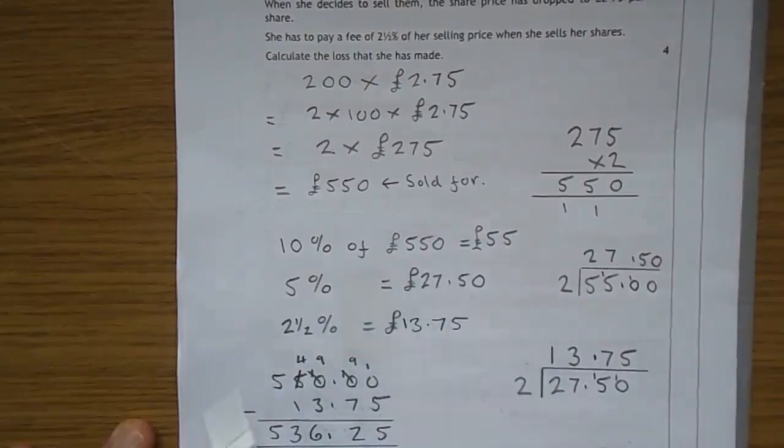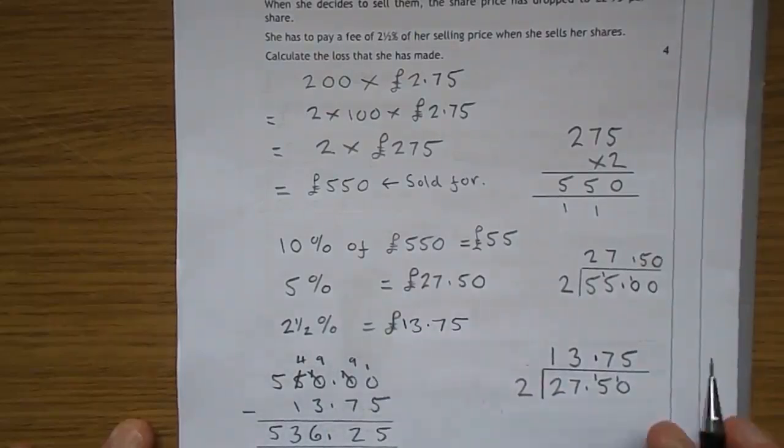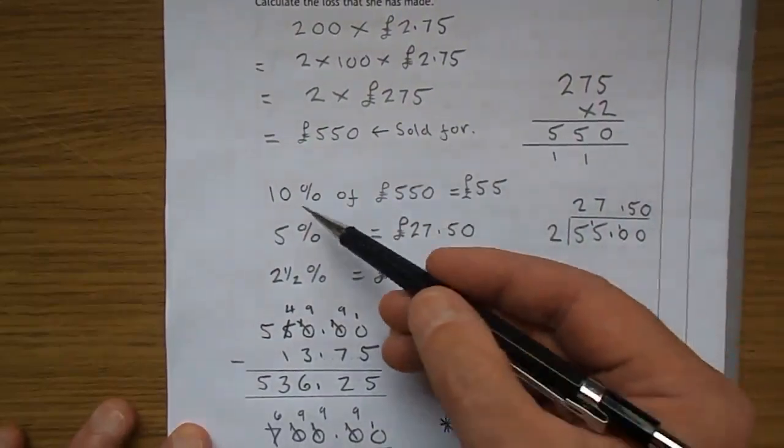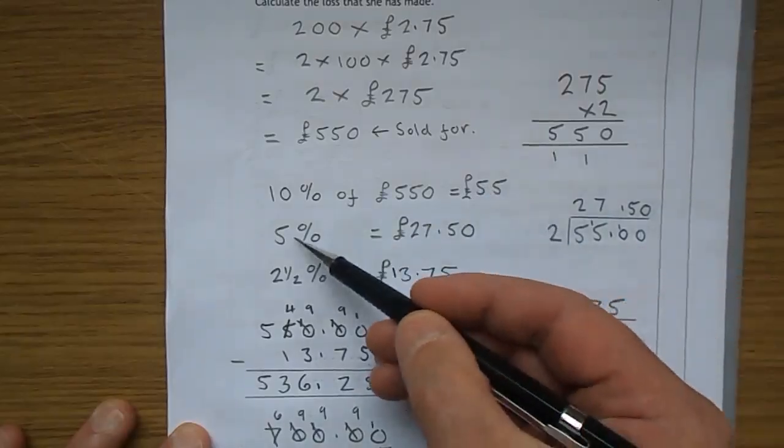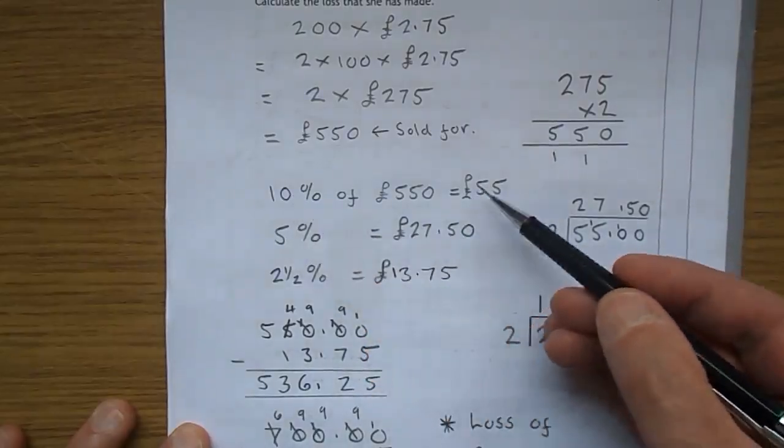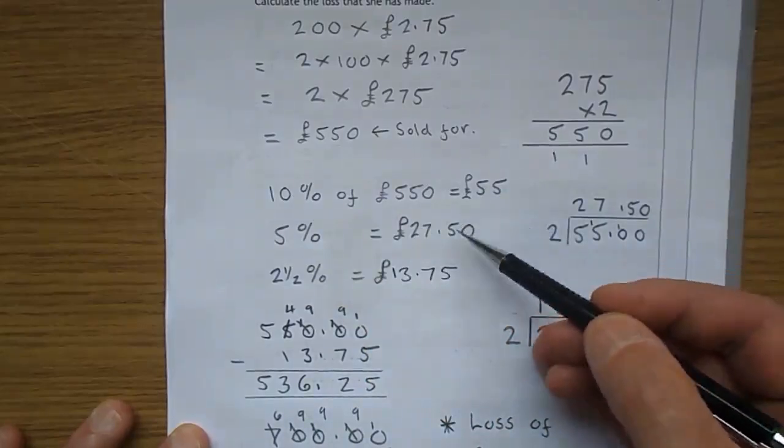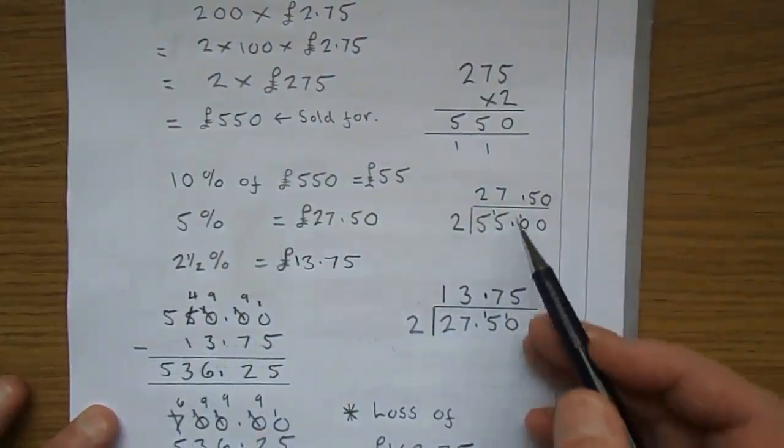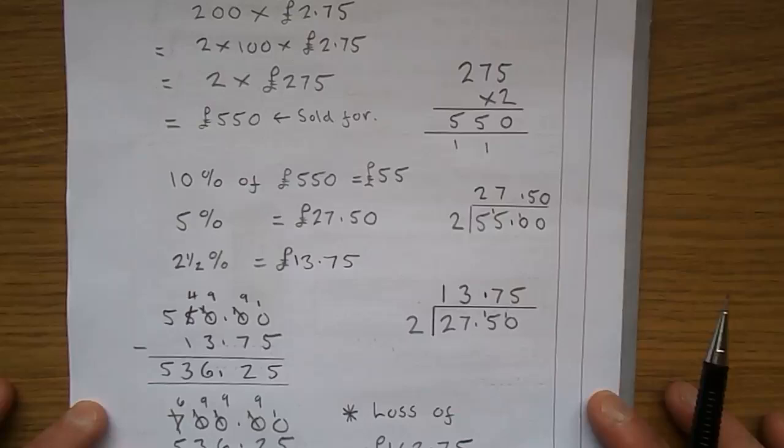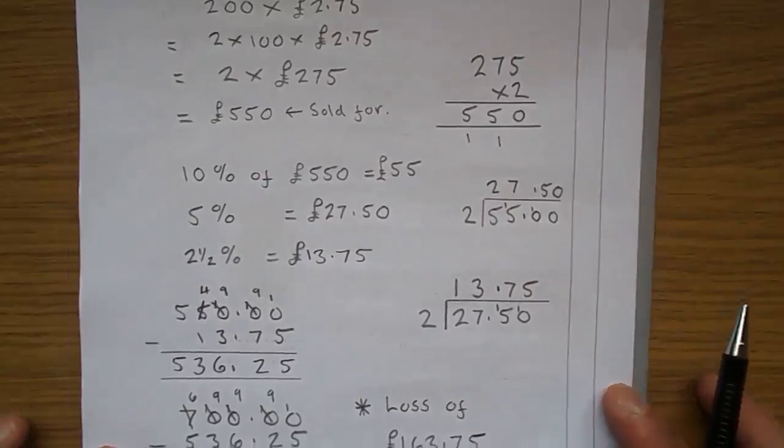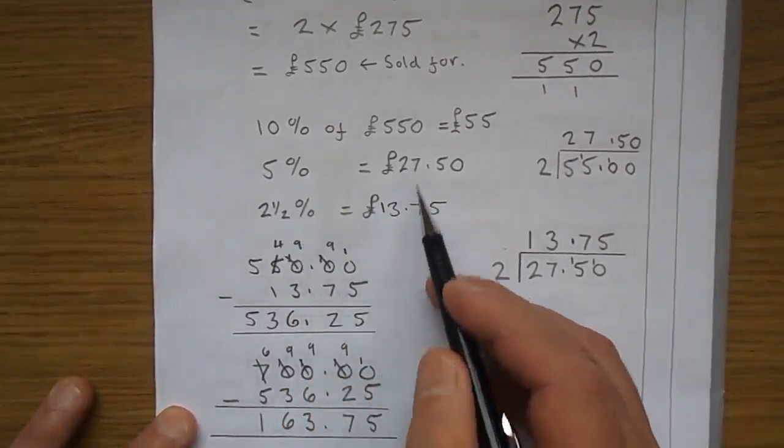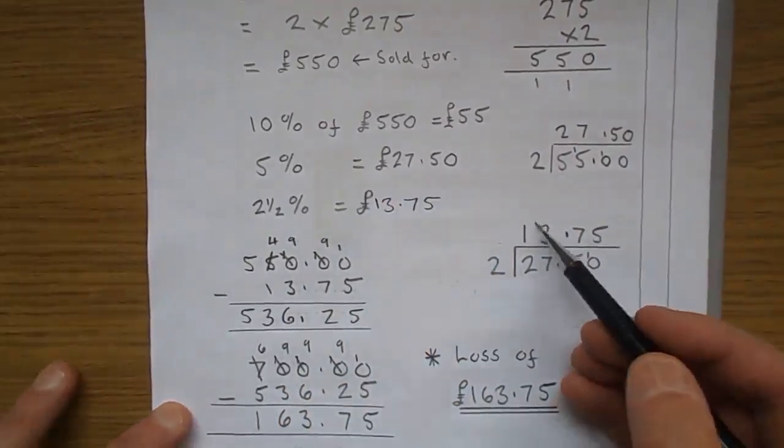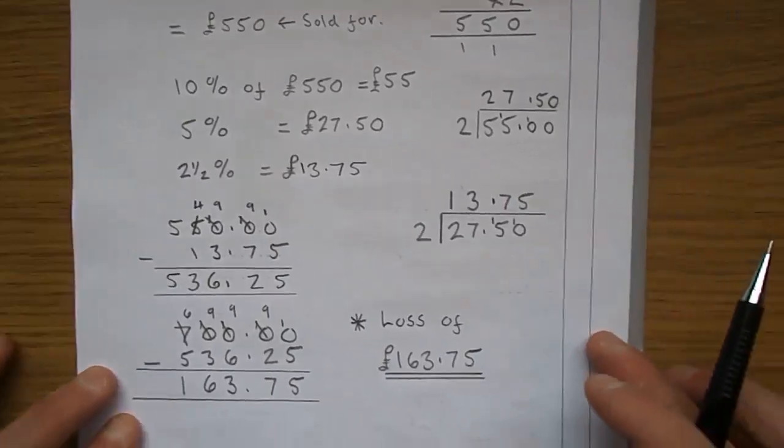She's also got to pay 2.5%, now how did I do that? I did it nice and slow. 10% of 550 is 55. 5%, half of 10%, half of 55, £27.50, you could do that as a chimney sum. Half of 5 is 2.5, so 2.5% is half of that. Again, you can see the sum down here, there it is there.